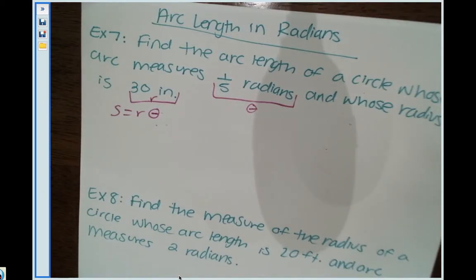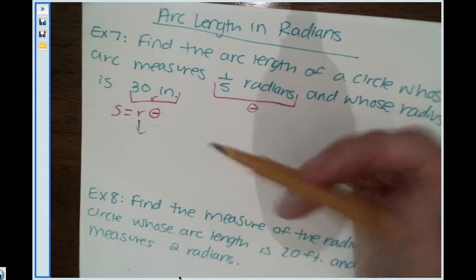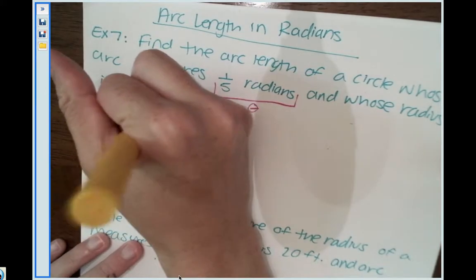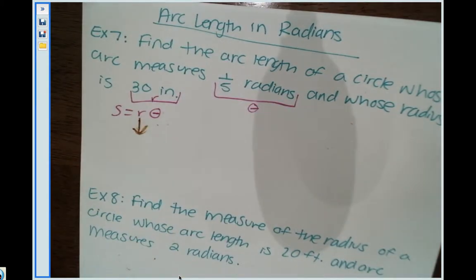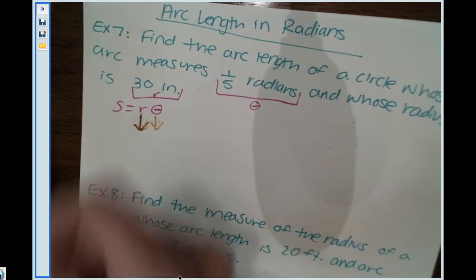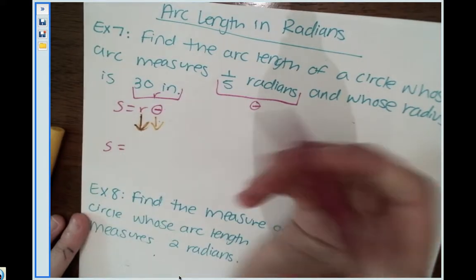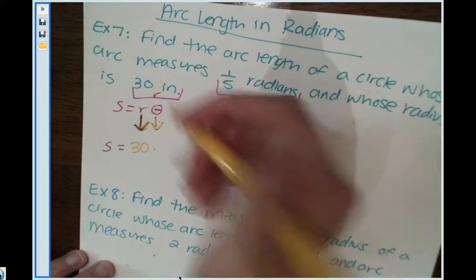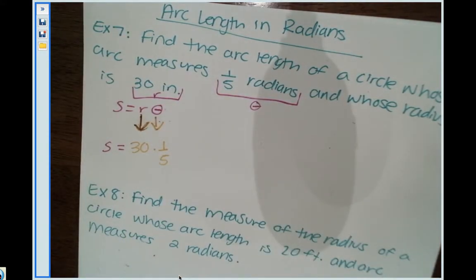Let's just substitute in these values. We're going to be replacing R and theta, so we're going to have S equals my radius, which is 30 inches, so 30 times theta, which is one-fifth.